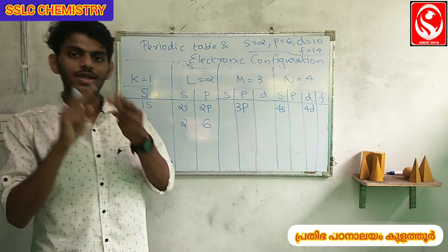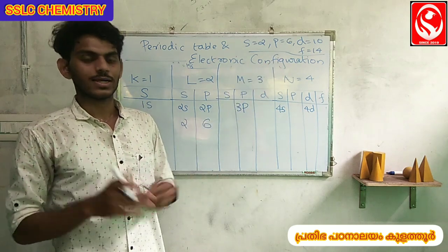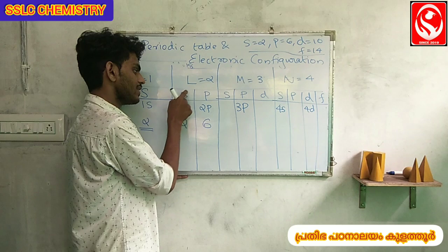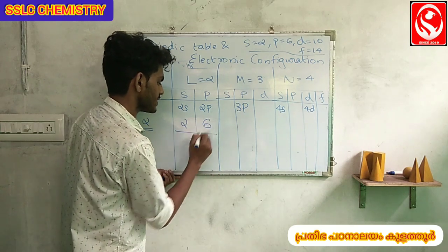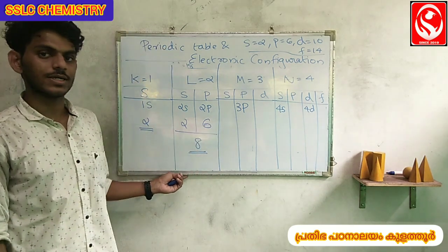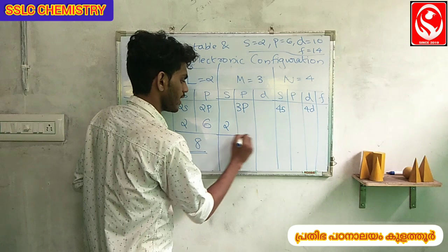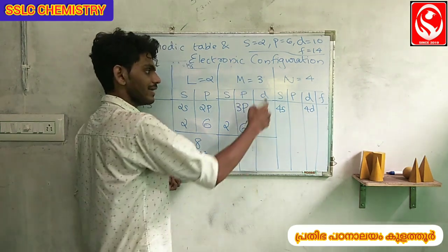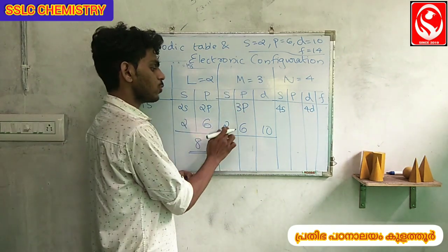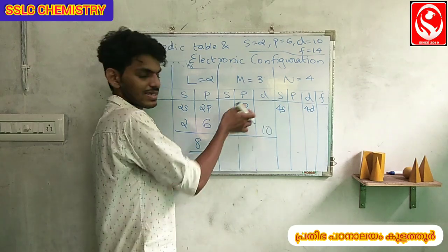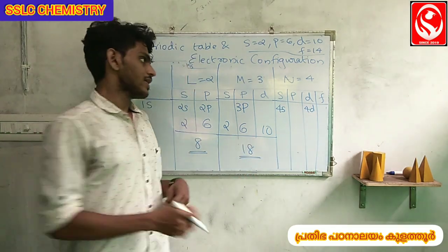The s subshell holds 2 electrons, p subshell holds 6 electrons, d subshell holds 10 electrons, and f subshell holds 14 electrons. For the L shell: s plus p equals 2 plus 6 equals 8 electrons. For the M shell: s plus p plus d equals 2 plus 6 plus 10 equals 18 electrons.